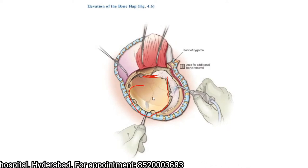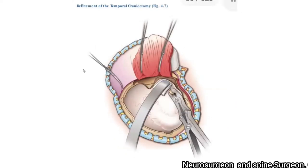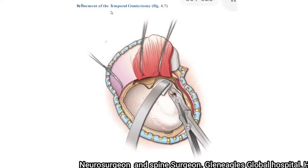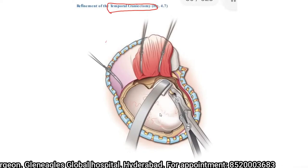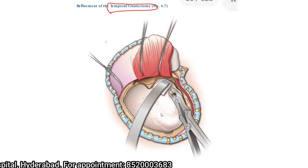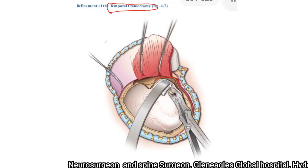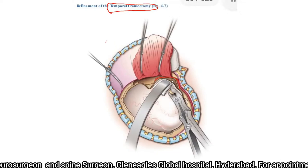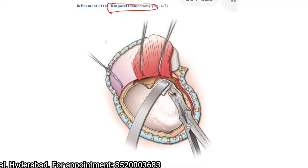Once you elevate the bone flap, this usually causes a demonstrable fall in ICP if you have already placed an ICP monitor. Now, the temporal craniotomy is an important step. In cases of traumatic brain injury and infarct with midline shift, uncal herniation is an important cause of death — and the uncus is part of the temporal lobe. So you must decompress the temporal lobe effectively by completing the temporal craniotomy, using a dissector to delicately separate the dura mater from the squamous temporal bone until you visualize the skull base — that is, the base of the middle cranial fossa.